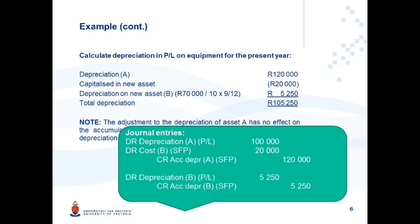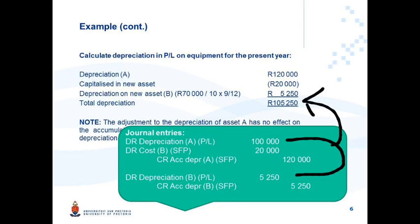For the journal entries: debit Depreciation — Profit or Loss on Equipment A for 100,000 Rand (the 120,000 full-year depreciation less the 20,000 capitalized to Equipment B). The second journal debits Cost of Equipment B in the statement of financial position for 20,000 Rand. Both entries credit Accumulated Depreciation on Equipment A for the full 120,000 Rand — confirming accumulated depreciation is unchanged. The second journal also records depreciation on Equipment B of 5,250 Rand, giving total depreciation in profit or loss on equipment for the current year.